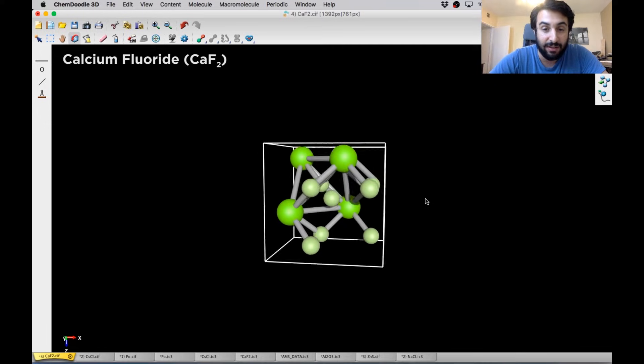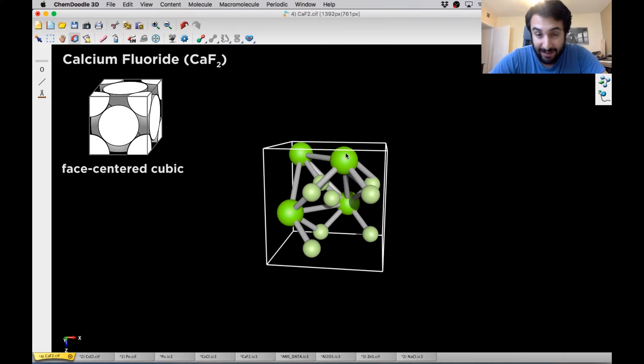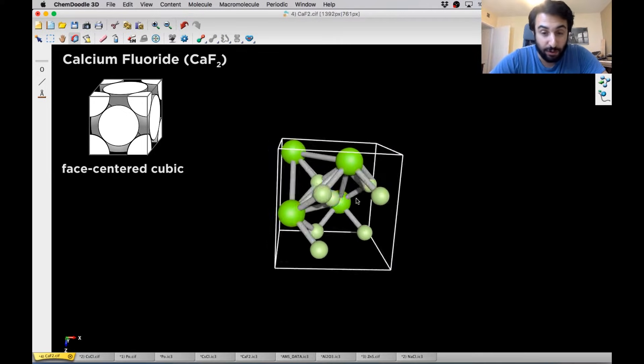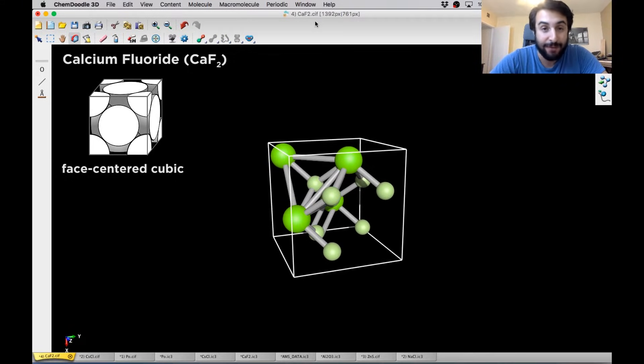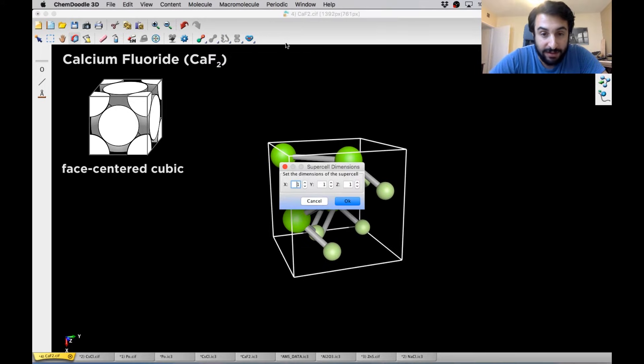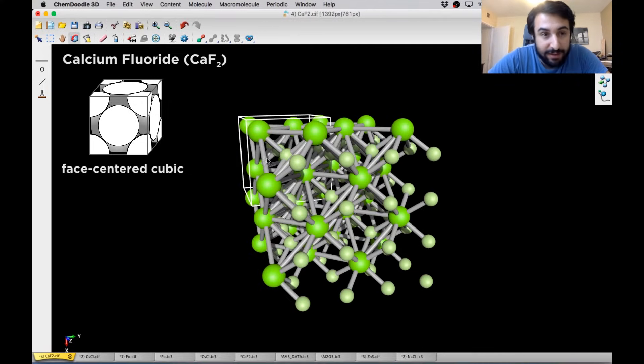So it is actually the calcium ions, the cations this time, that are going to form the face-centered cubic structure. While the fluoride ions are going to fill in the tetrahedral holes. Though in this case they will only fill half of the tetrahedral holes. So let's go ahead and build this out just a little bit. And we can get a better sense of this.